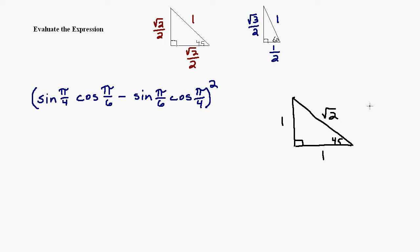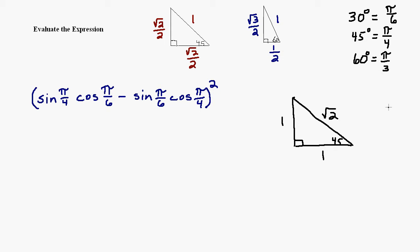The next thing we need to have under our belt is the fact that 45 degrees equals pi over 4. The three conversions you really need to know are: 30 degrees is pi over 6, 45 degrees is pi over 4, and 60 degrees is pi over 3. These show up a lot.